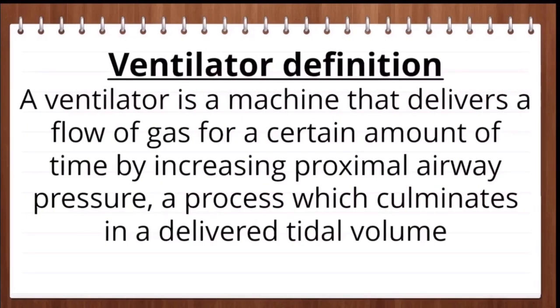First, the definition of ventilator: a ventilator is a machine that delivers a flow of gas for a certain amount of time by increasing proximal airway pressure, a process which culminates in a delivered tidal volume. So basically there is an increase in the proximal airway pressure, which results in flow of gas for a certain amount of time, and that culminates into the tidal volume. All ventilators we use nowadays are based on positive pressure ventilation.